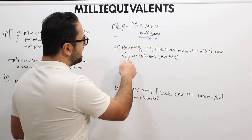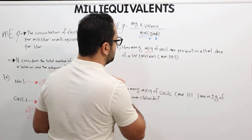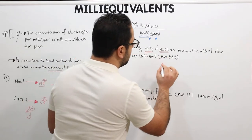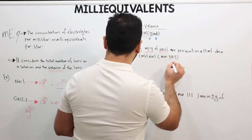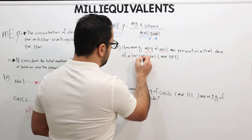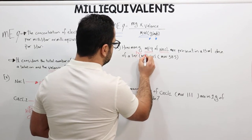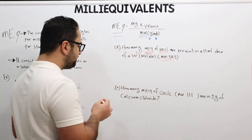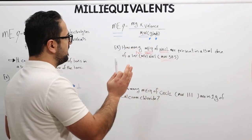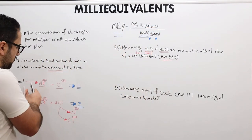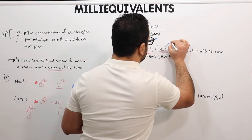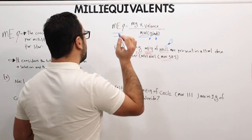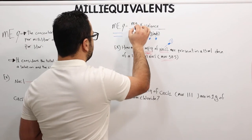Let's take Example 1: How many milliequivalents of sodium chloride are present in a 15 mL dose of a 10% weight-in-volume sodium chloride solution? The molecular weight is given. Step one: the valence number of sodium chloride is one, as we discussed. Step two: the molecular weight is given. Step three: we need to find the milligrams of sodium chloride.